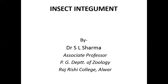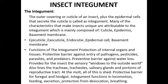Integument is almost present in all organisms, which is the outermost covering of the animal. In insects, the outer covering or cuticle plus epidermal cells that secrete the cuticle is called integument. Many of the characteristics that make insects unique are attributable to the integument, which is mainly composed of cuticle, epidermis, and basement membranes.